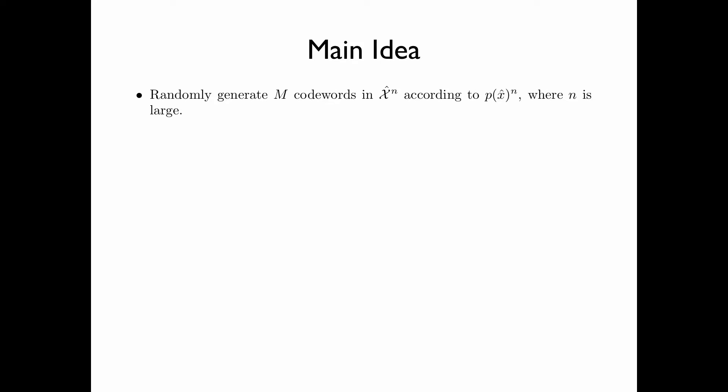We already have finished more than half of the proof. So let us summarize the main idea. First, we randomly generate m codewords in the alphabet x̂ to the power n, according to p(x̂)^n, where n is large.